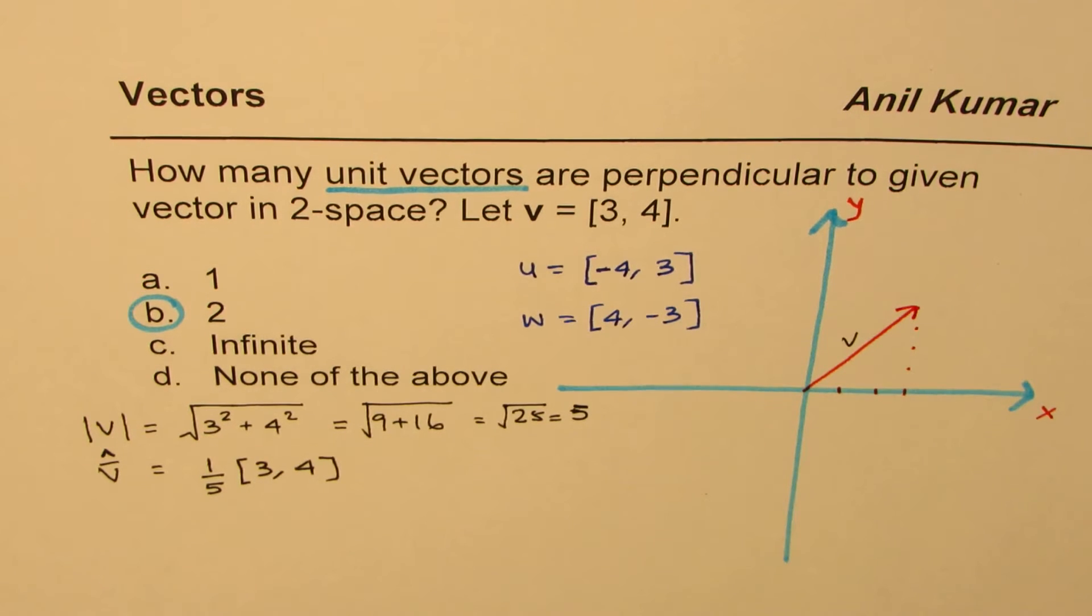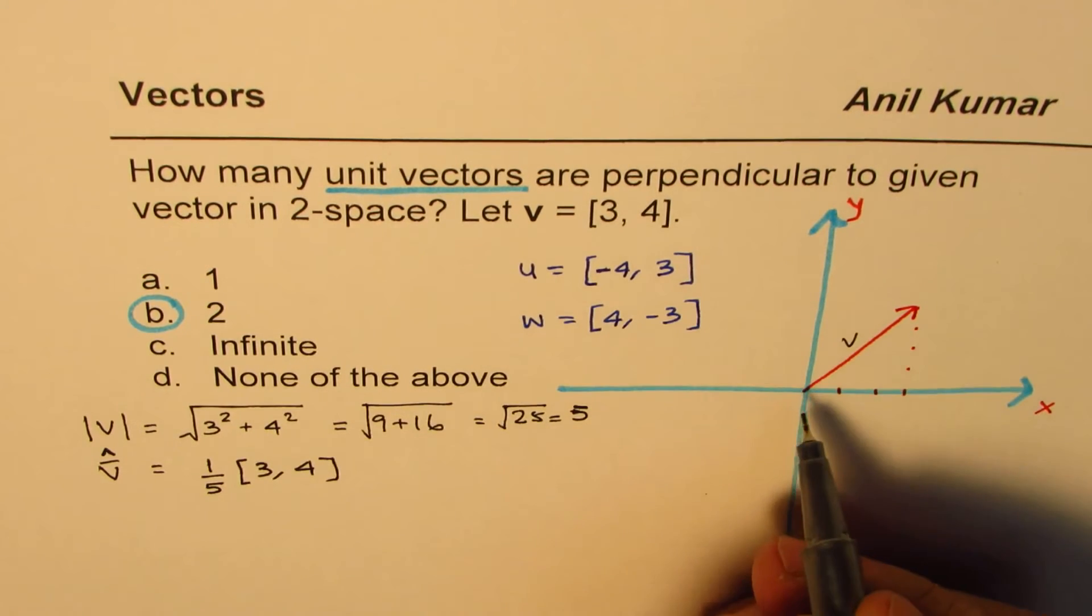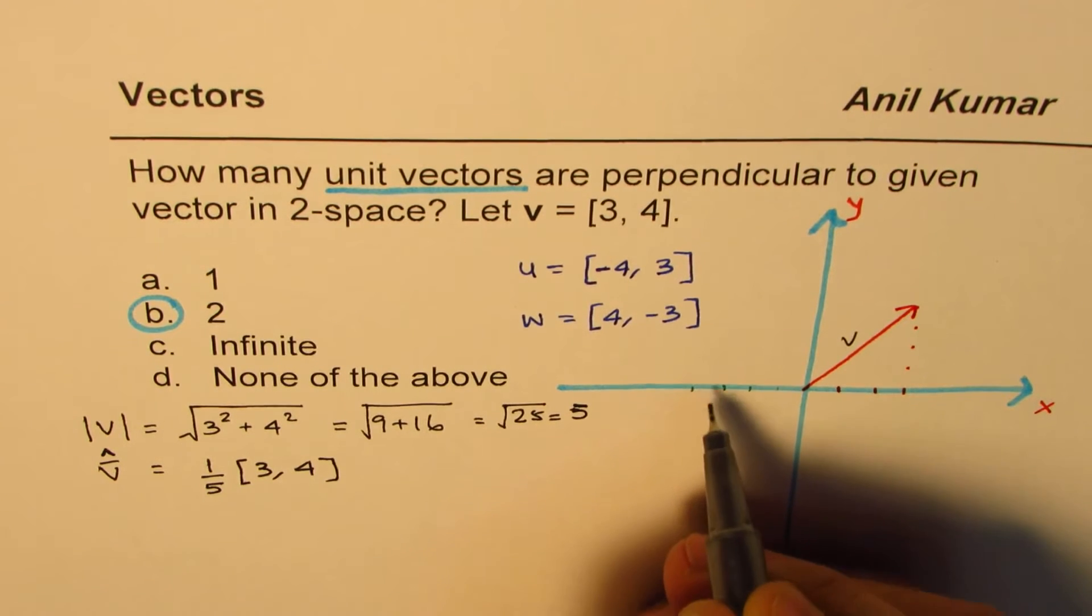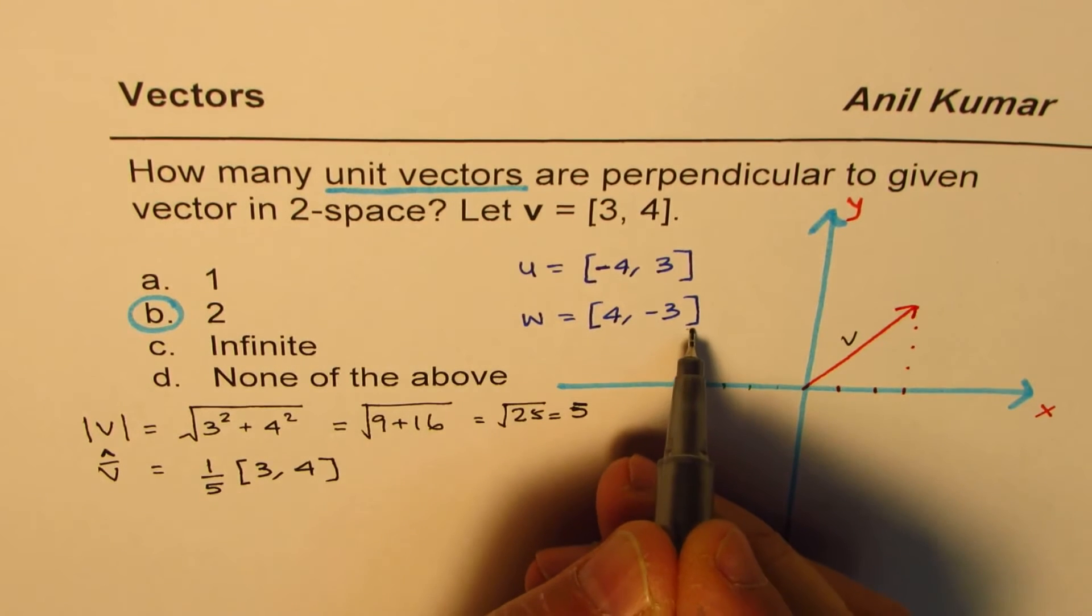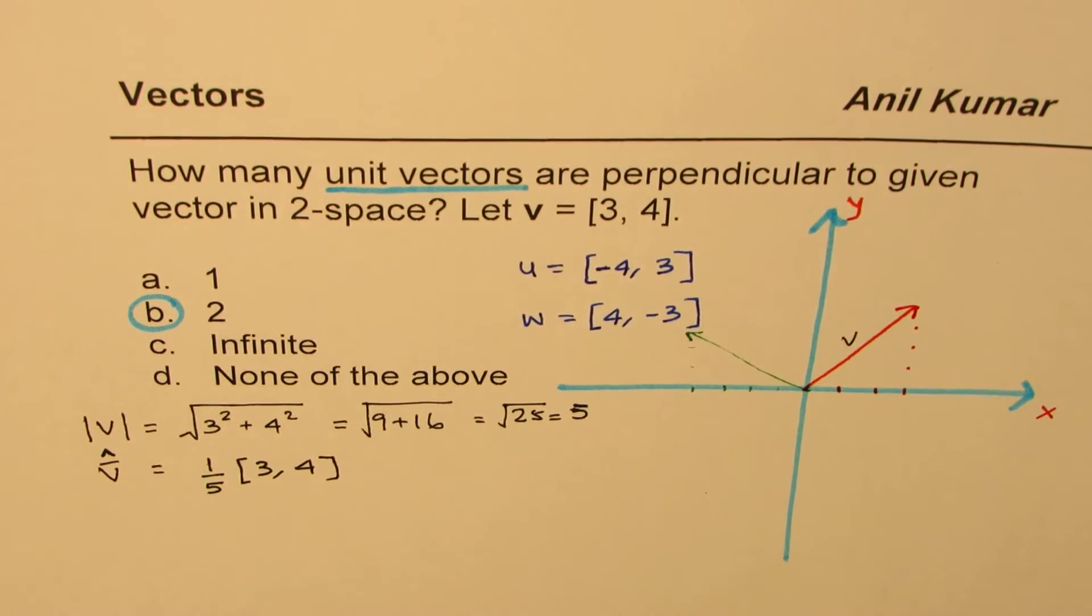Let me represent these vectors here on R2 space. [-4, 3]: that's -4, 3, which will be 1, 2, 3, 4 along one axis and 1, 2, 3 along the other. If I join this vector kind of like this, that becomes [-4, 3].